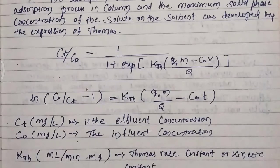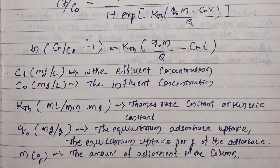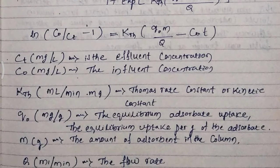Here, Ct is the effluent concentration in mg/L. C0 is the influent concentration in mg/L. kth is the Thomas rate constant or kinetic constant, with units of mL per minute per milligram. Q0 is the equilibrium adsorbent uptake per gram of adsorbent, with units of mg/g. m is the amount of adsorbent in the column, in grams.